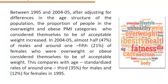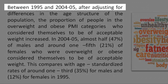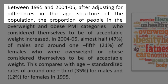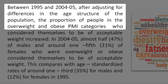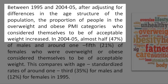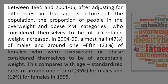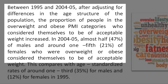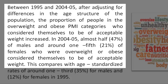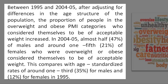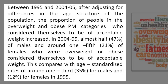Reading 5. Between 1995 and 2004 to 2005, after adjusting for differences in the age structure of the population, the proportion of people in the overweight and obese BMI categories who consider themselves to be of acceptable weight increased. In 2004 to 2005, almost half — 47% of males and around one-fifth, 21% of females — who are overweight or obese consider themselves to be of acceptable weight. This compares with age-standardized rates of around one-third (35%) for males and 12% for females in 1995.